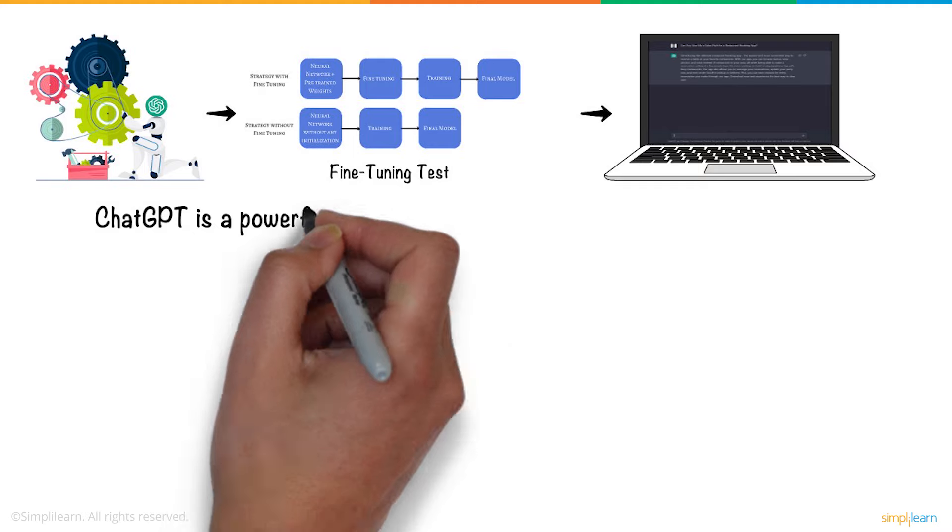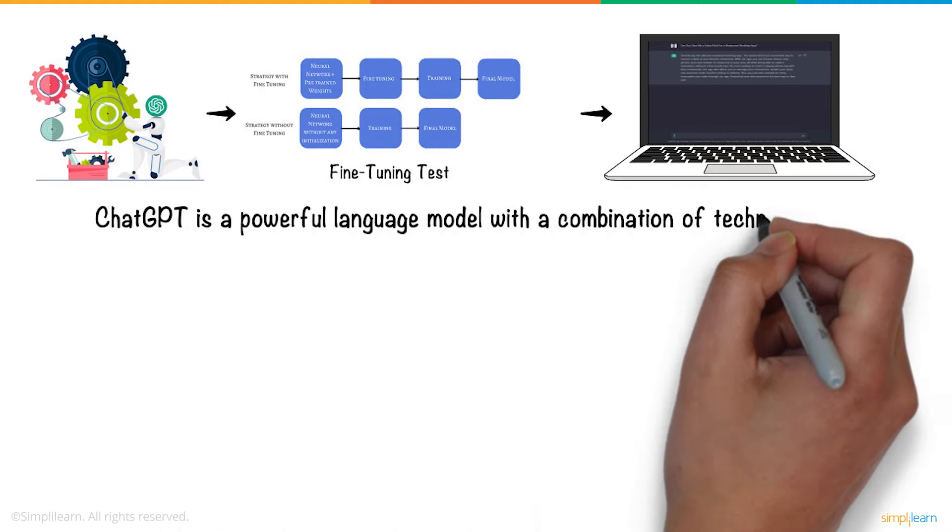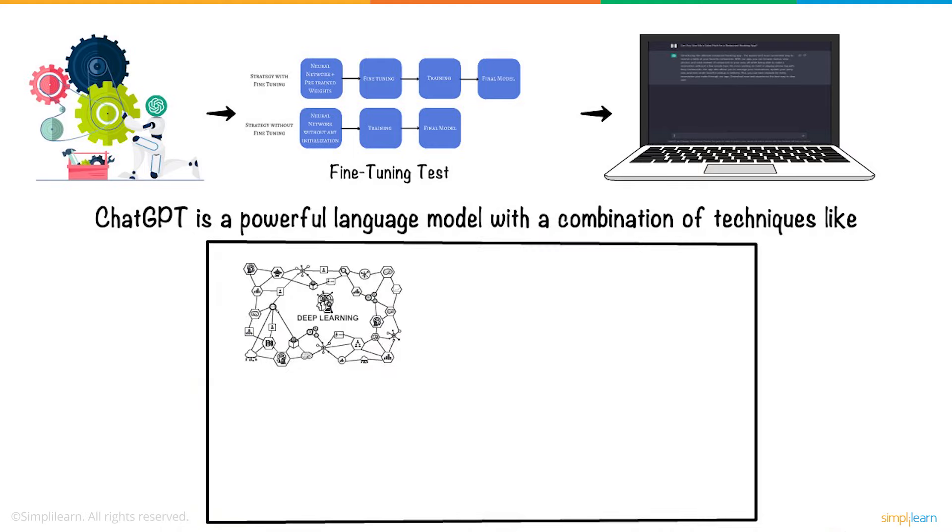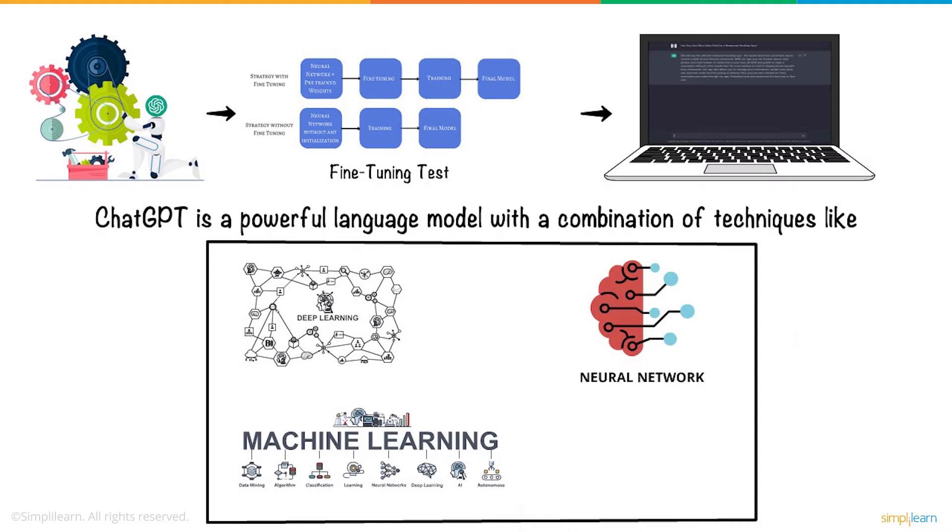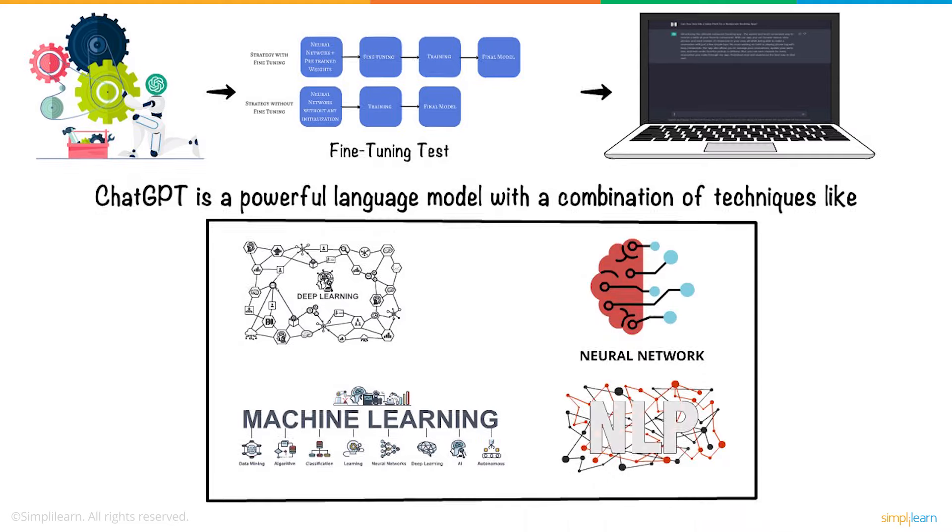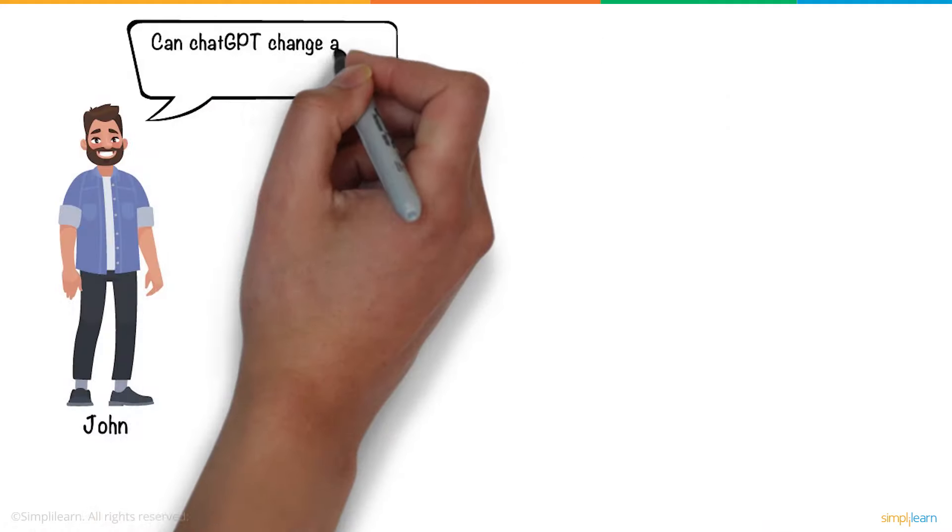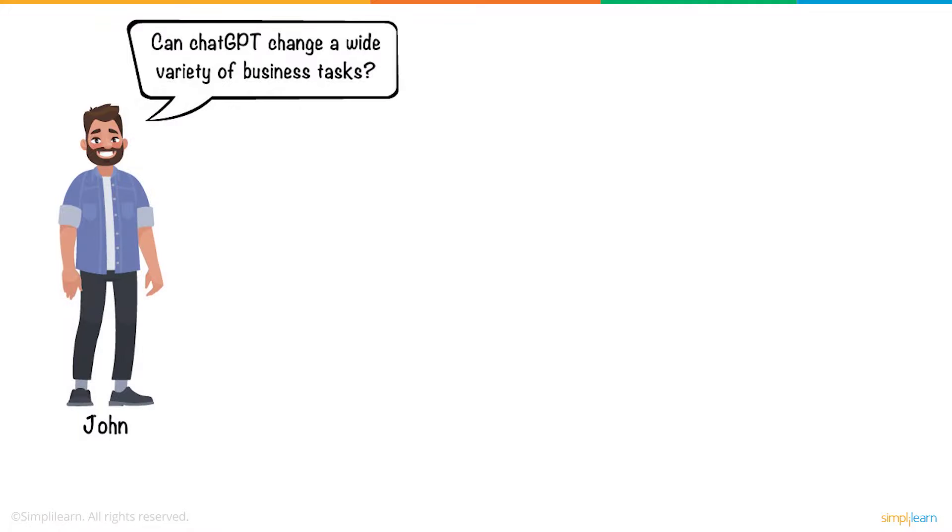Overall, ChatGPT is a powerful language model with a combination of techniques like deep learning, machine learning, neural networks, and natural language processing. Can ChatGPT change a wide variety of business tasks? John asked.